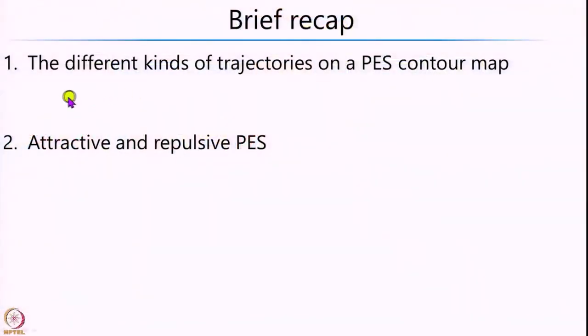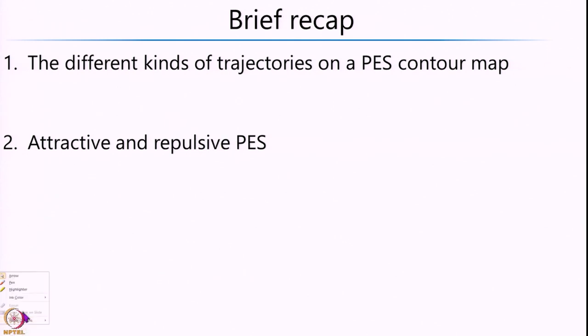In the previous lectures we have been looking at potential energy surfaces of the H3 system and also different kinds of trajectories on the potential energy contour maps. We also saw what are called attractive and repulsive potential energy surfaces. Just to refresh your memories, I will show that for the ABC kind of systems.